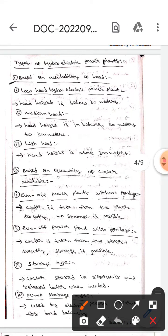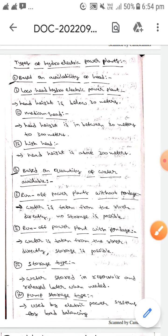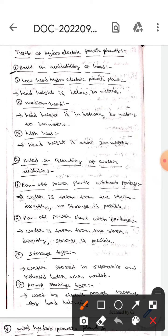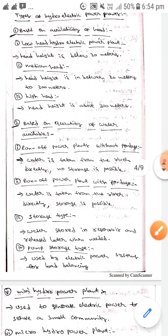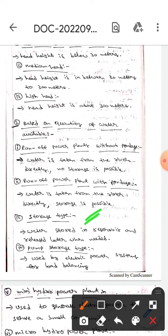The second classification is based on quantity of water available. The first one is run-of-river power plants without ponds, where water is taken from the river directly, but storage is also possible. The storage type stores water in a reservoir and releases it later when needed.